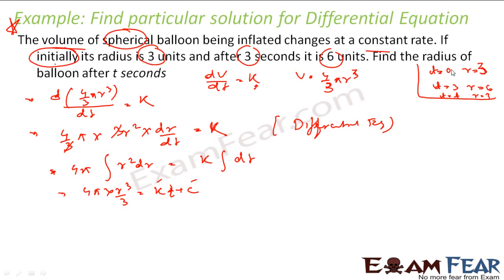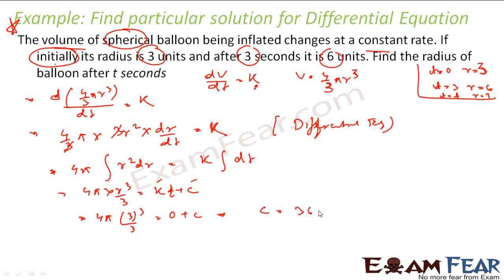Putting t = 0 and r = 3: 4π · 3³/3 = 0 + c, which gives c = 4π · 9 = 36π. So c = 36π.